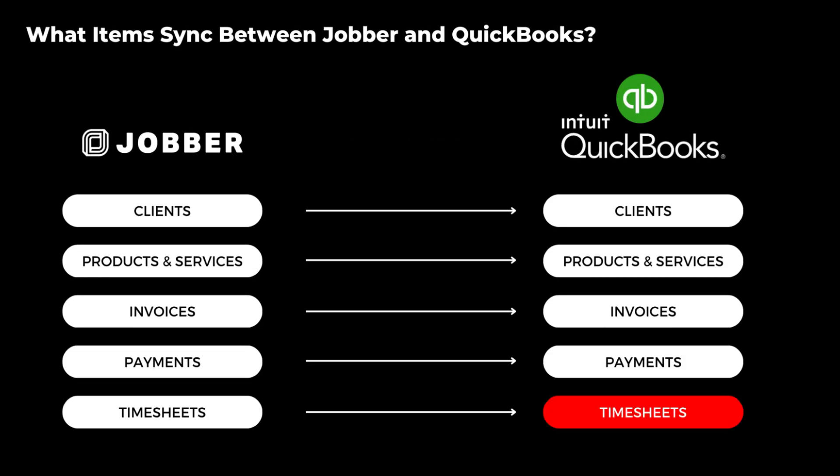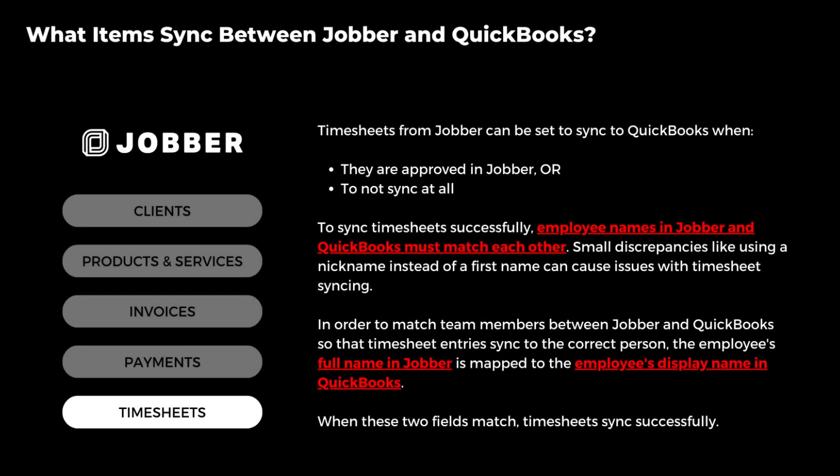Timesheets from Jobber can be set to sync to QuickBooks when they're approved. To ensure successful syncing, employee names in both platforms must match. Once synced, you can view these timesheets in QuickBooks under the Time Activities by Employee Detail Report.